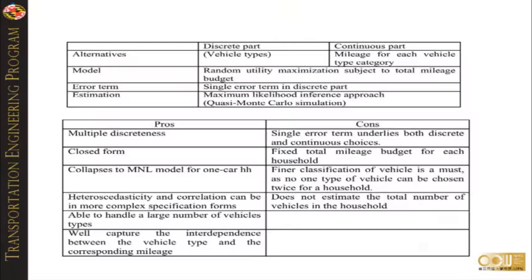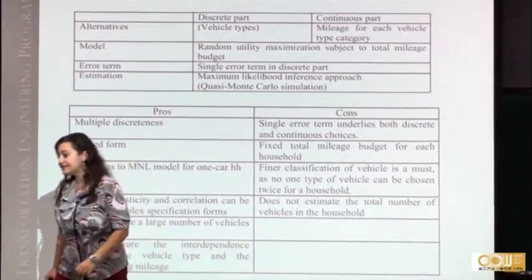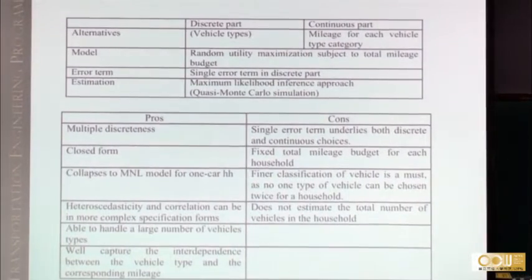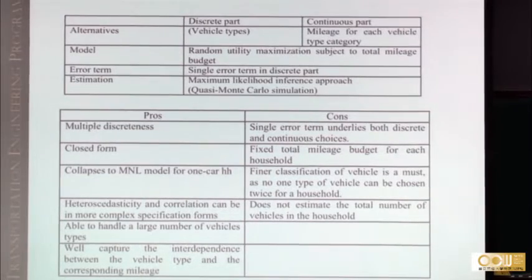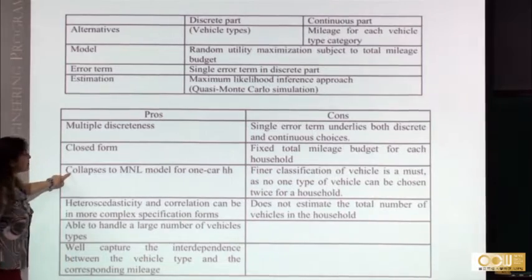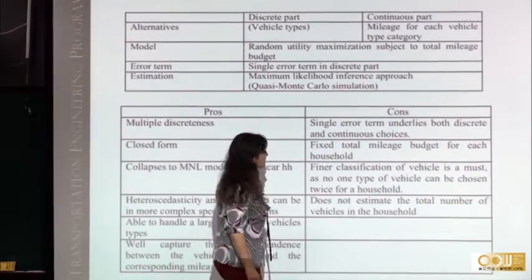Summarizing what is good about Chandra Bhatt's model: it was one of the first joint discrete-continuous frameworks in transportation, with vehicle types and mileage under random utility maximization, a single error term in the discrete part, and estimable with maximum likelihood. It collapses to MNL for one car. The main limitation: it does not estimate the total number of vehicles in the household and operates under a fixed mileage budget constraint.